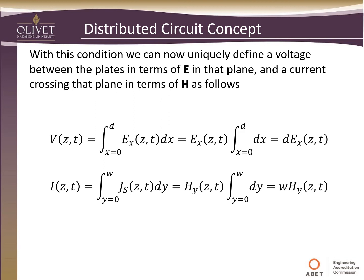With this condition, we can now uniquely define a voltage between the plates in terms of the electric field in that plane, and likewise the current crossing that plane in terms of the magnetic field. Using tools from the last couple of lectures, we know we can relate voltage to the electric field. In this case it's only an X component, so the voltage is just the depth D times the electric field. Likewise, the current can be related to the magnetic field by integrating along the Y direction — that's the width — and we see that it's just the width times the magnetic field. The voltage equals D times the electric field, and the current equals the width times the magnetic field. We need to remember that as we move forward.